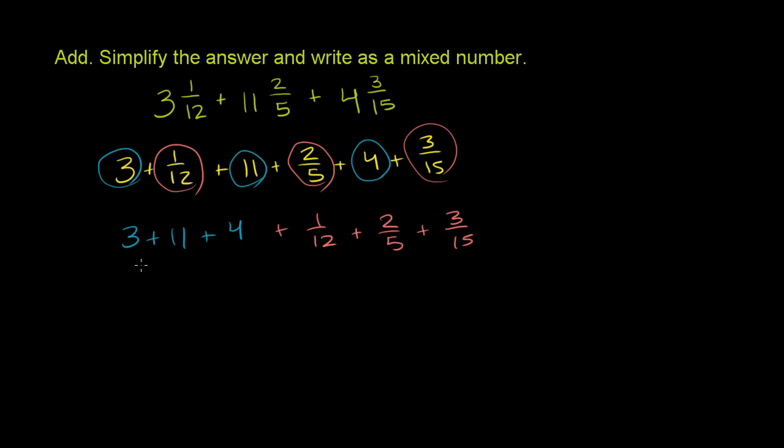The whole number part is straightforward. 3 plus 11 is 14, plus 4 is 18. So that part is just 18.